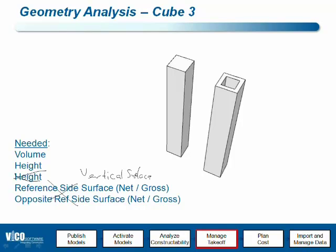This behavior can apply to rectangular and circular columns, but also to profile columns. This is an example of a profile column. We have an inner loop and an outer loop that define the profile — in this case, maybe of a steel column.